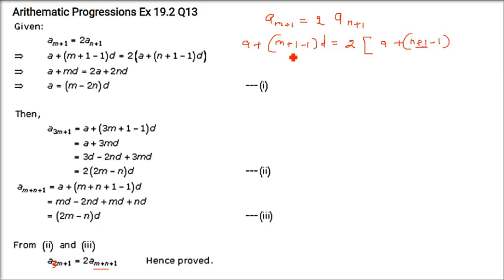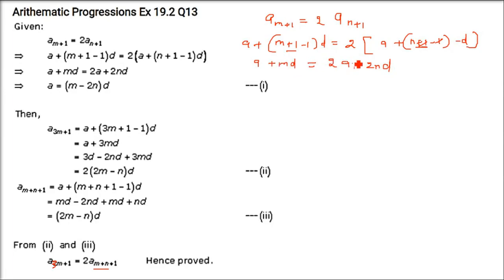So what is given? A sub (m+1) is equal to twice of A sub (n+1). We have to prove that A sub (3m+1) equals twice of A sub (m+n+1). First, let us solve this. In place of n, we write: a + (m+1−1)·d equals twice of a + (n+1−1)·d, giving a + md equals twice of a + nd, which is 2a + 2nd.